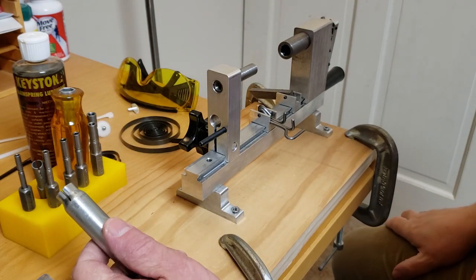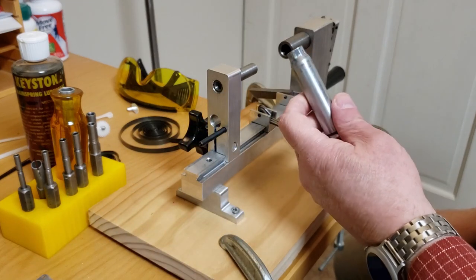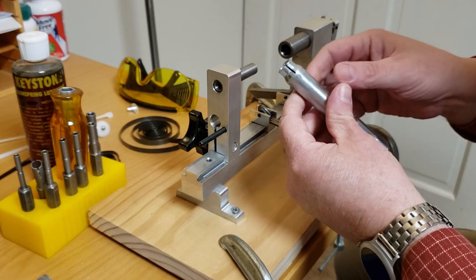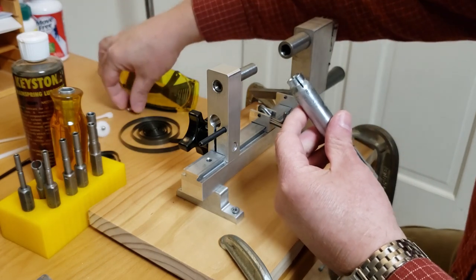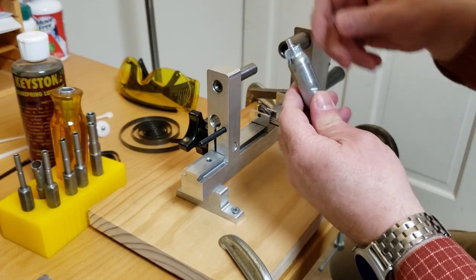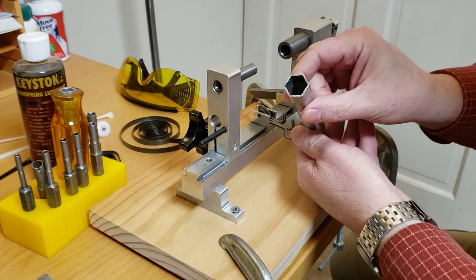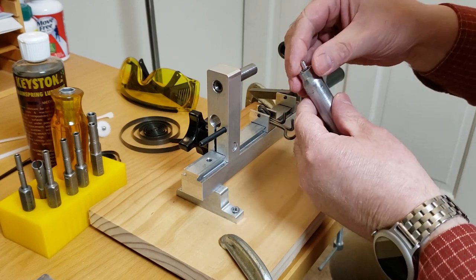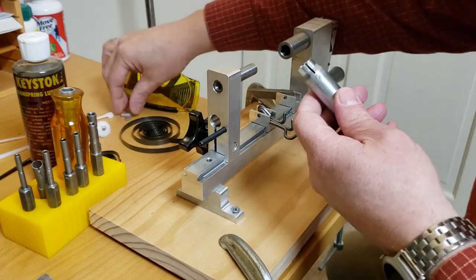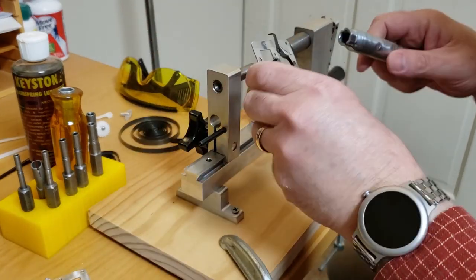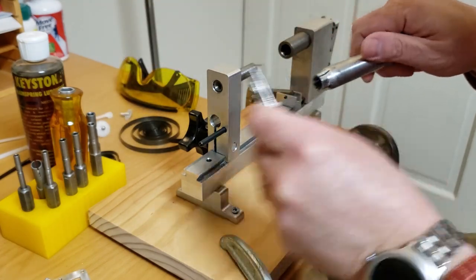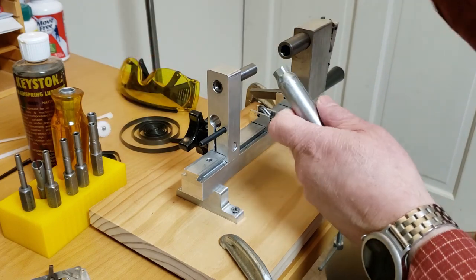But first, before I went for the spring winder, I thought I'd try something a lot of other people have done. I made a let-down key out of a spark plug wrench, making a slot in it and winding the expanding slot. And then using the assembled frame to tighten the spring as a way to wind the spring. But I found a couple of problems with that.